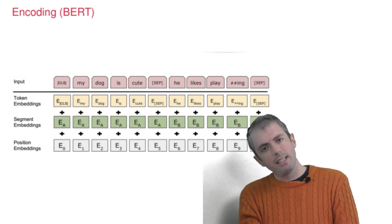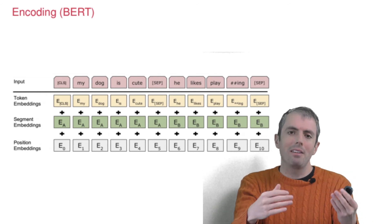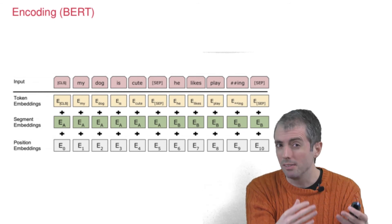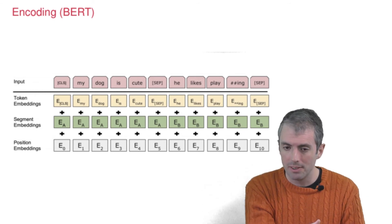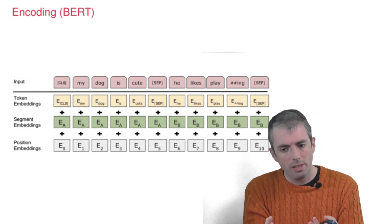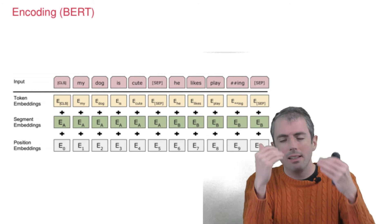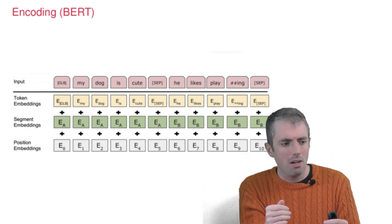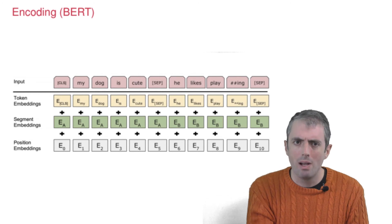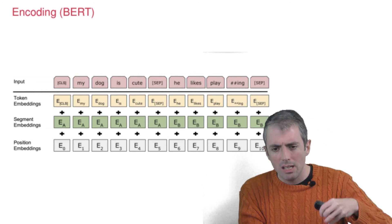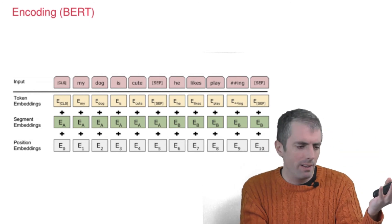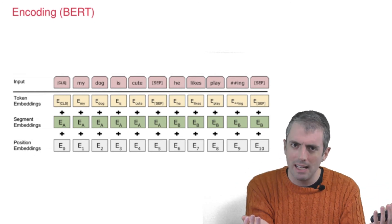But you also have different segment embeddings. This grew out of ideas for encoding parts of speech and things like that into their own representations. But BERT took it an additional step by, let's say that you're trying to figure out the answer to a question, and you might have some source sentence from Wikipedia that you found, and a question, and you want to figure out what the answer is.